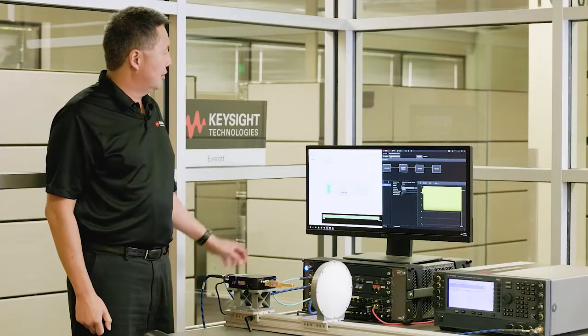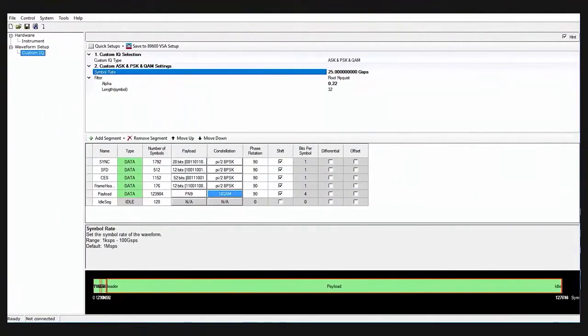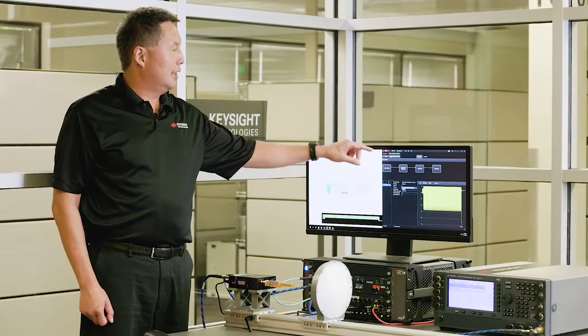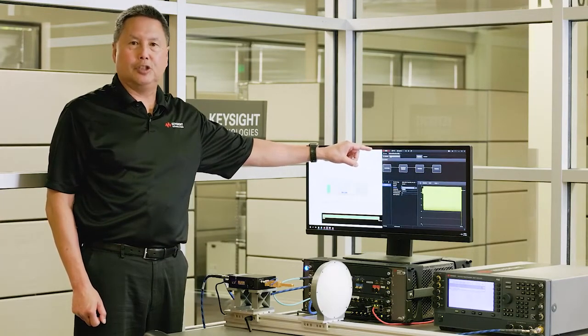So the test setup consists of Signal Studio Pro for custom modulation. We're going to use this to generate a single carrier waveform with a symbol rate of 25 giga symbol per second. It's a frame structure, a custom frame structure, with a data payload, preamble, and pilots. So this generates a file, and then that file is read into Keysight's PathWave Advanced Waveform Utility, or AWU.